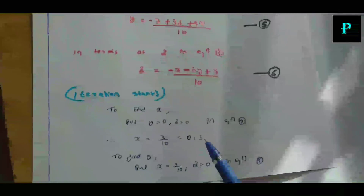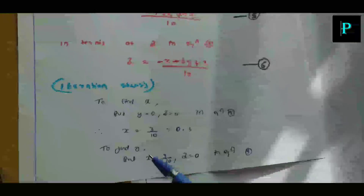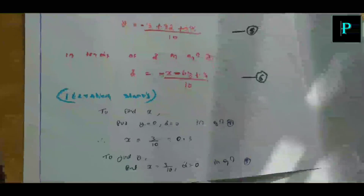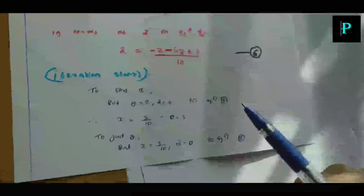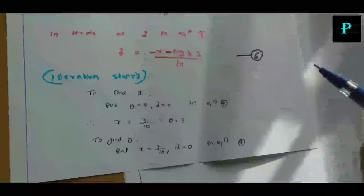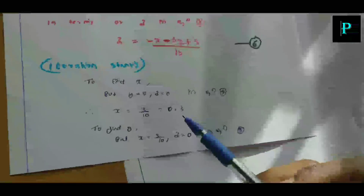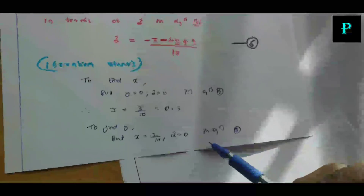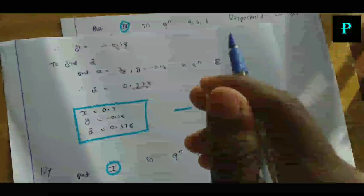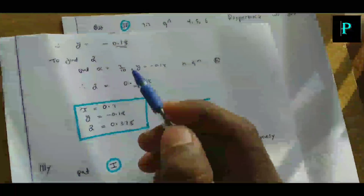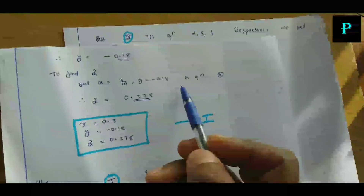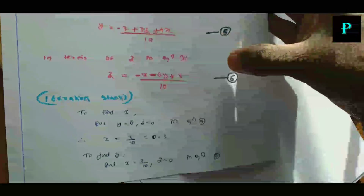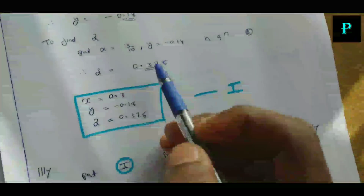We put X equal to 0.3, then substitute X into Y values. X equals 0.3, Y equals minus 0.1. We substitute Z into the equation using the updated values at each step of the iteration.